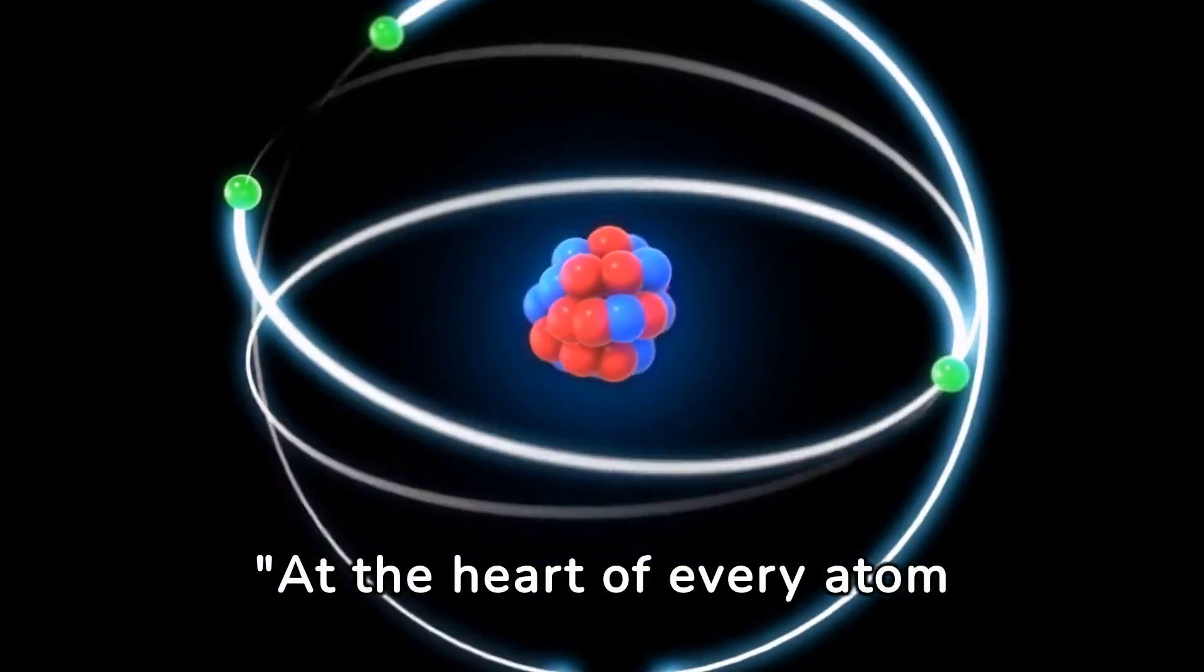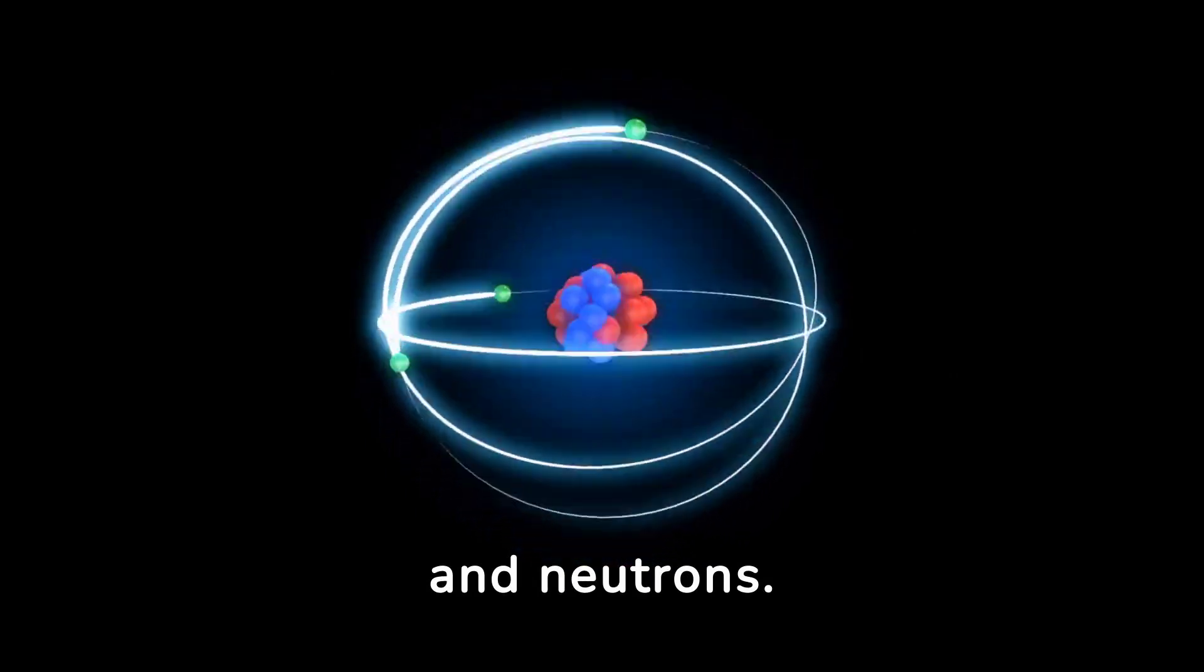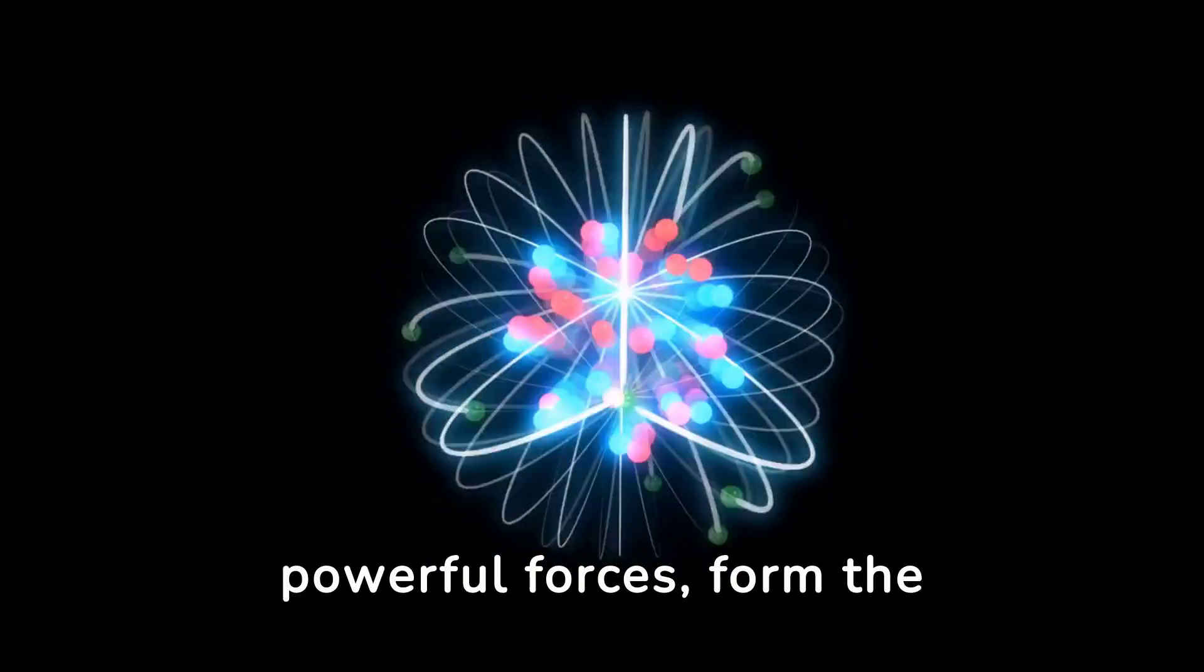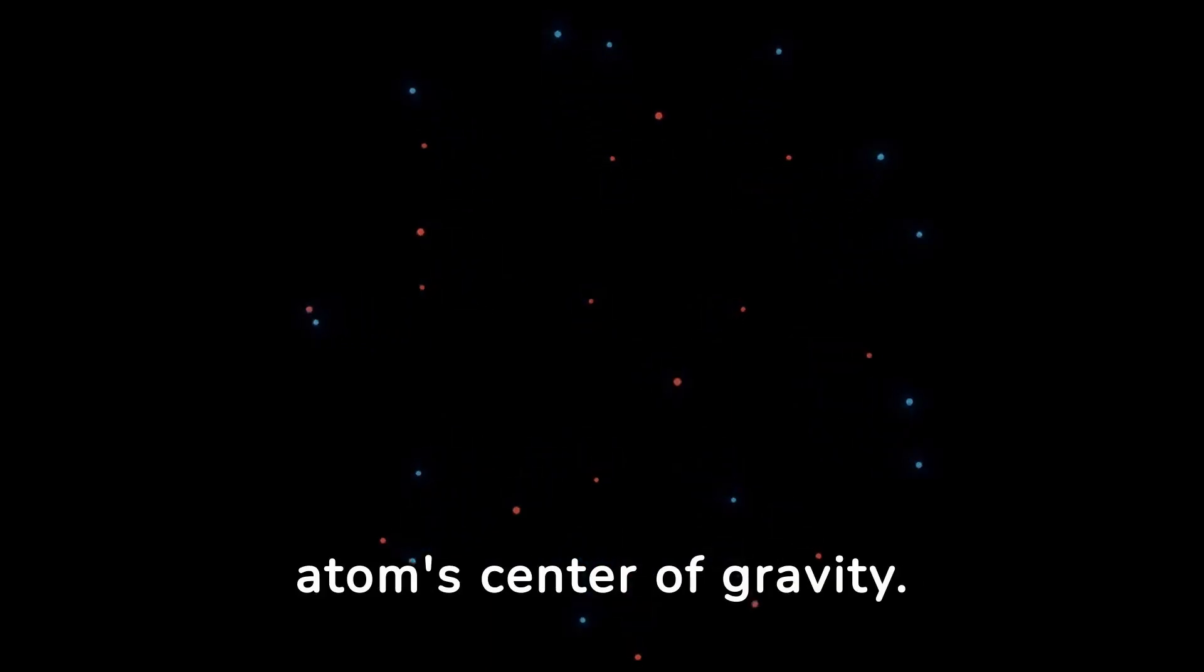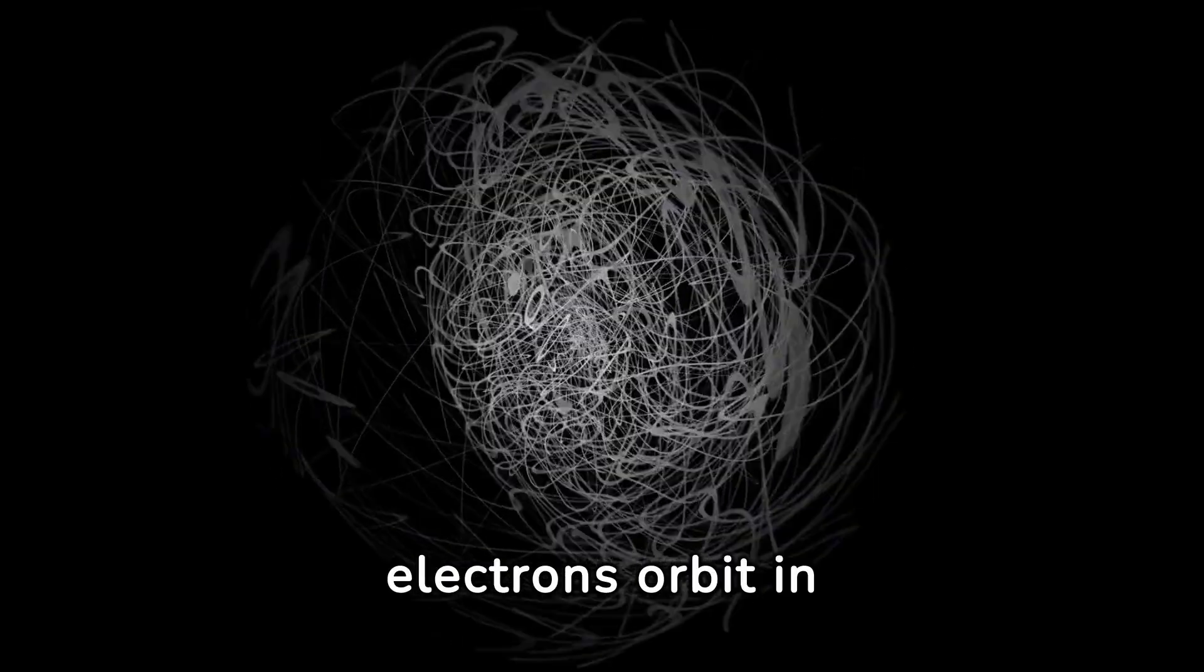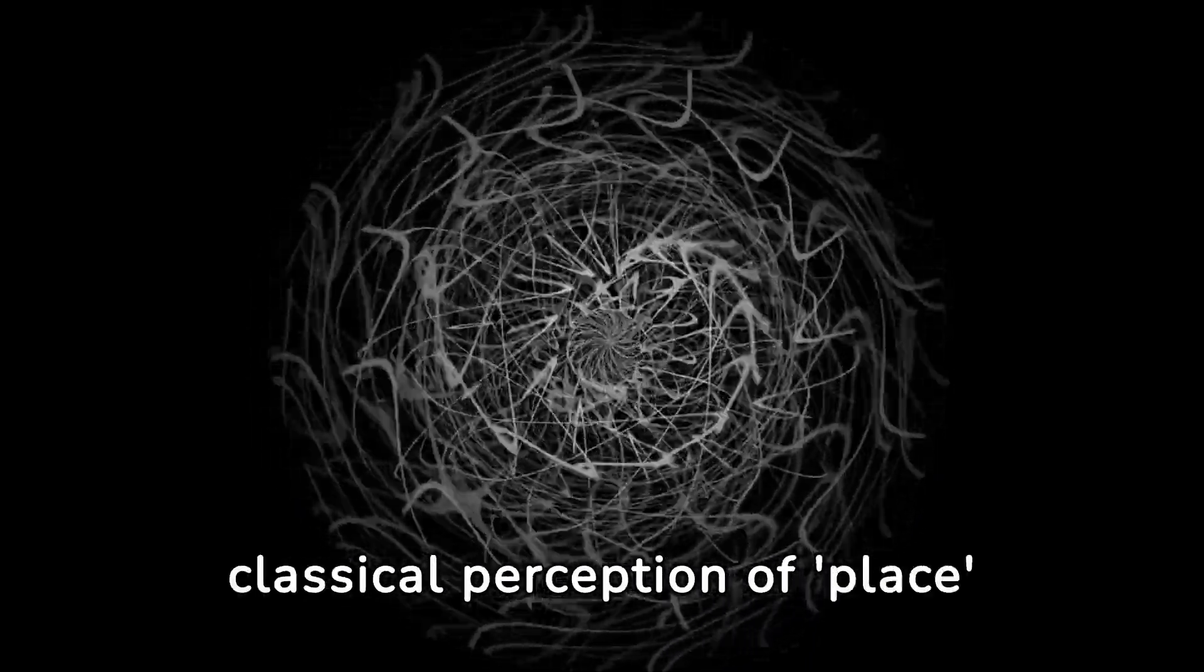At the heart of every atom lies the nucleus, a dense congregation of protons and neutrons. These particles, bound together by powerful forces, form the atom's centre of gravity. Around them, in a ballet of energy and movement, electrons orbit in paths that challenge our classical perception of place and space.